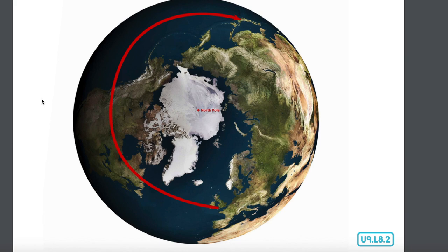Think about a basketball. The circumference of a basketball — the distance around it if you measure in the very middle — is 30 inches. The distance around the same ball, if you measure at a point closer to the top, is only 15 inches.